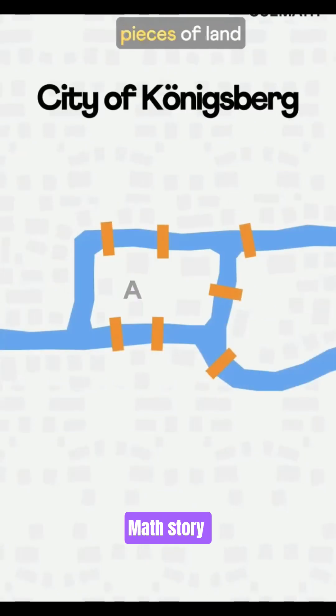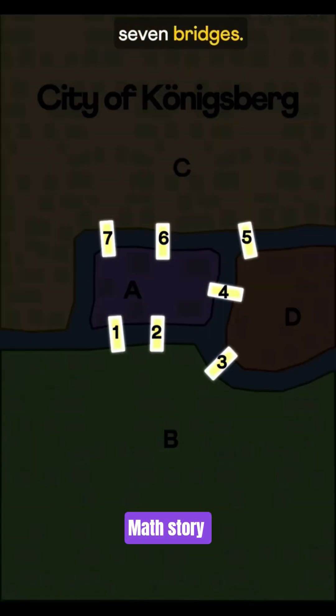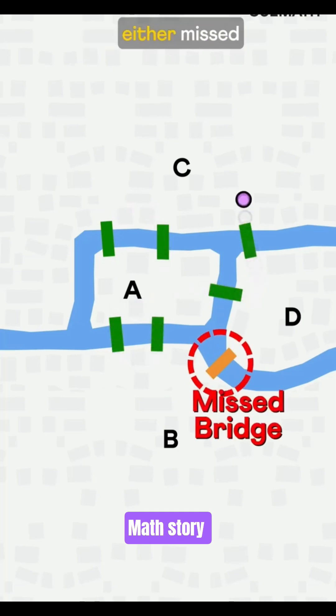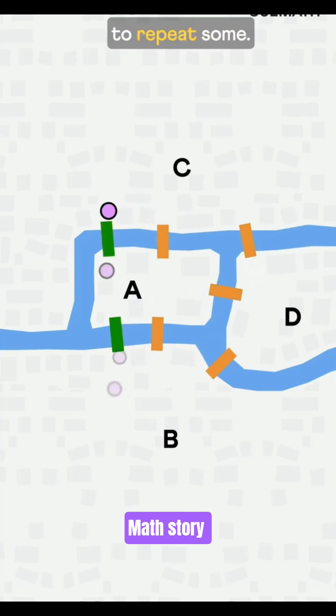In the city of Königsberg, four pieces of land were connected by seven bridges. Locals tried crossing all the bridges exactly once, but they either missed some bridges or had to repeat some.